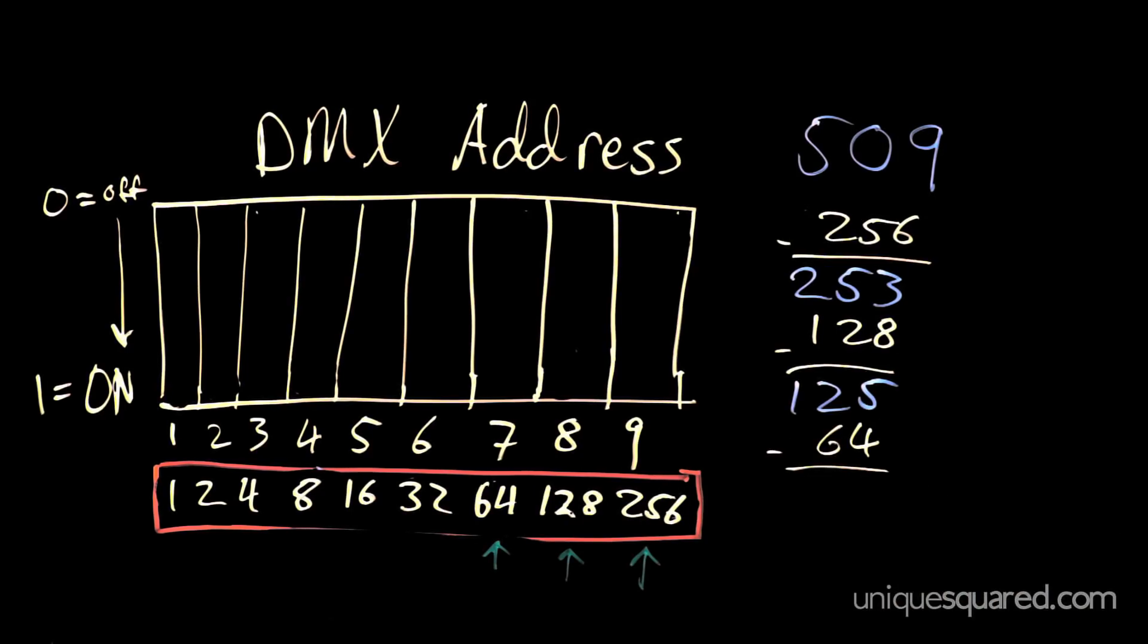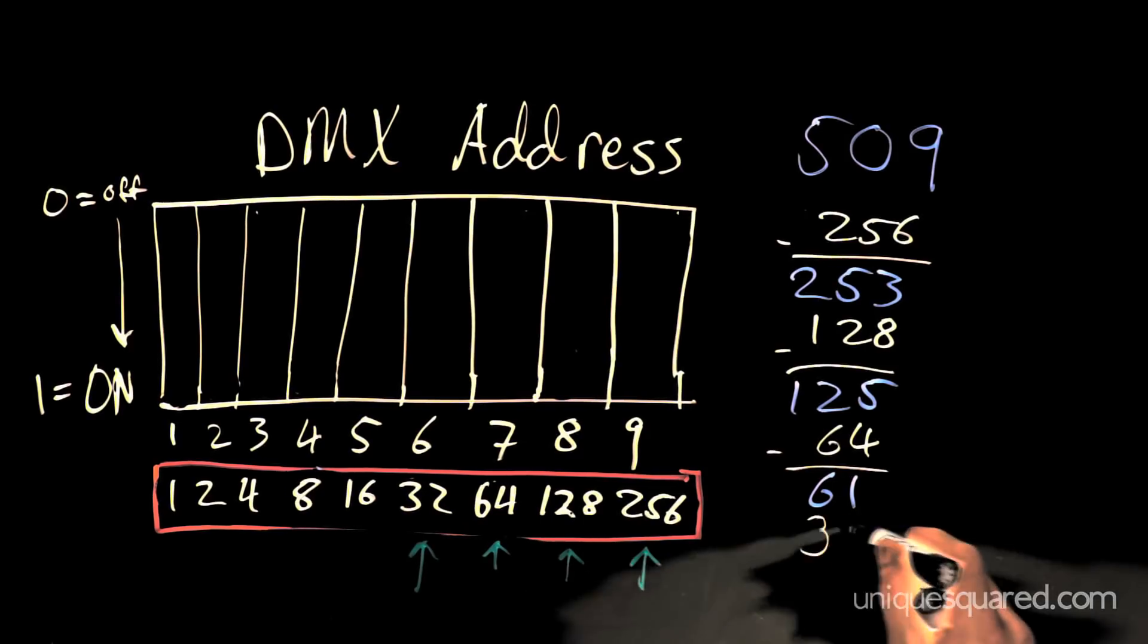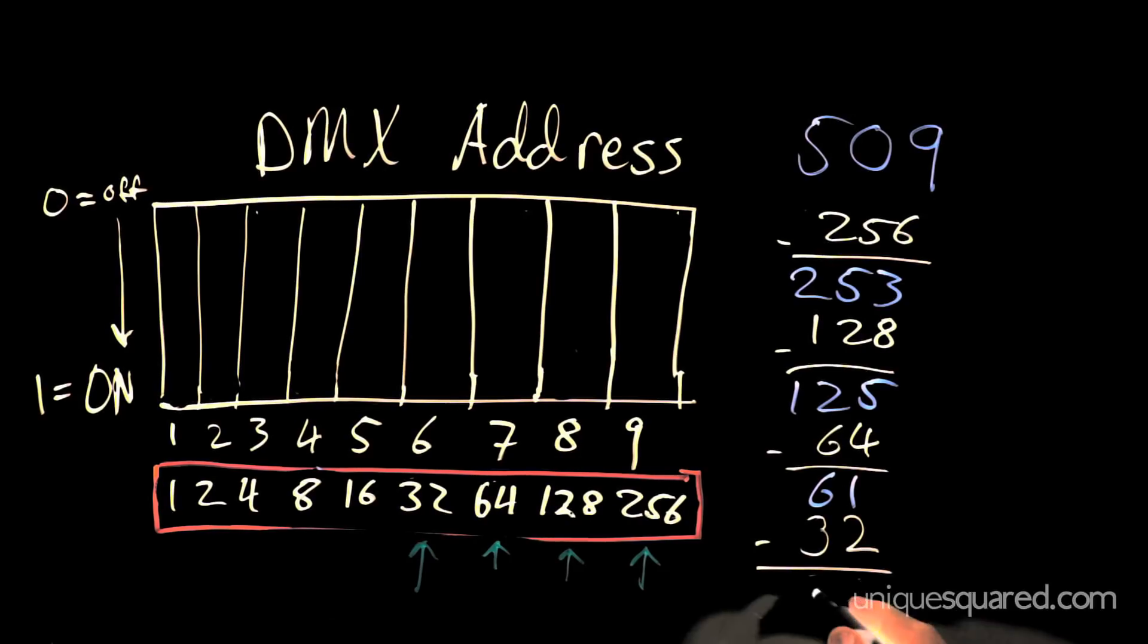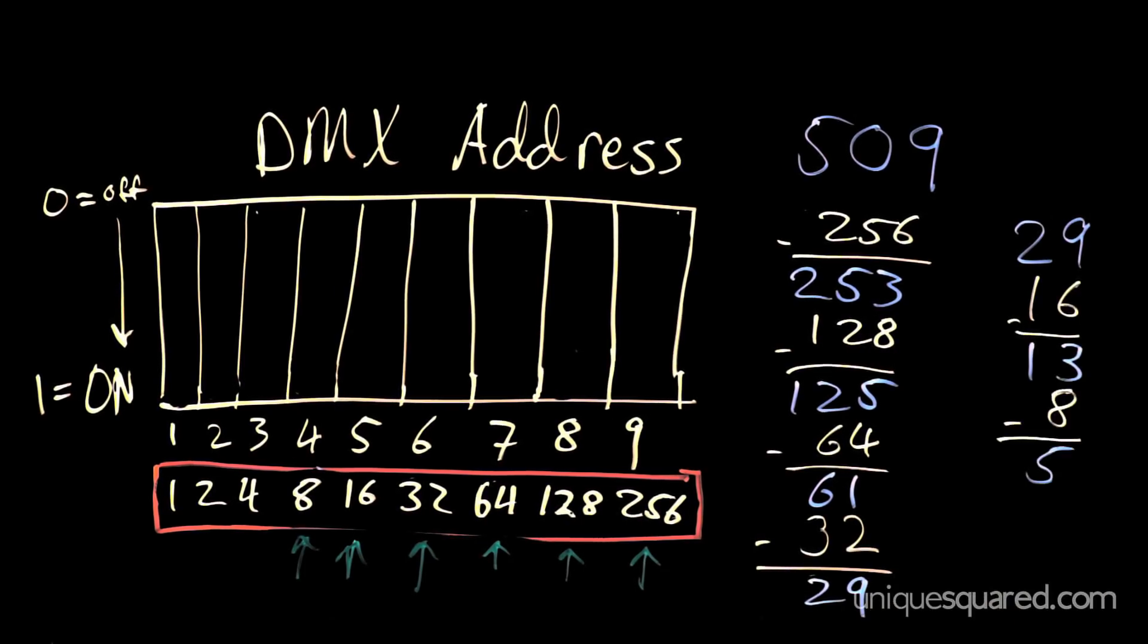Do the math, and we get 61. The largest number, smaller than or equal to 61, is 32. So, we subtract that and get 29. Continue like that until you're left with 0.